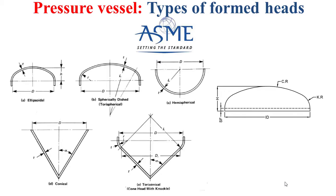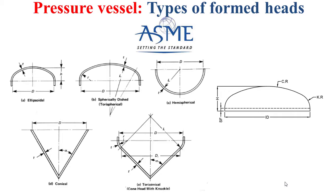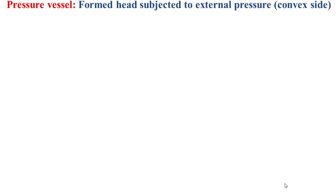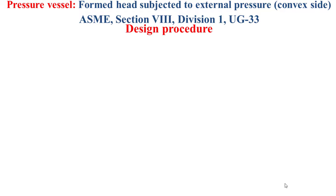In this educational video, I will handle the case of ellipsoidal, tori-spherical, and hemispherical formed heads. I will explain how to size the thickness of the formed head on the convex side — which means subjected to external pressure — based on ASME Section VIII, Division 1, UG-33, where we have a design procedure.